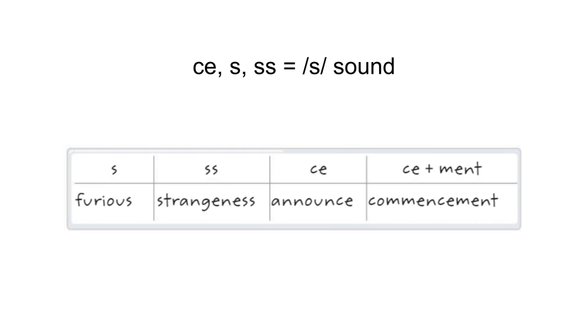Next, we have an example of CE making the S sound at the end: announce. And lastly, this is showing that CE can be paired with a suffix like -ment: commencement. It does not change the CE sound when we add a suffix on the end.